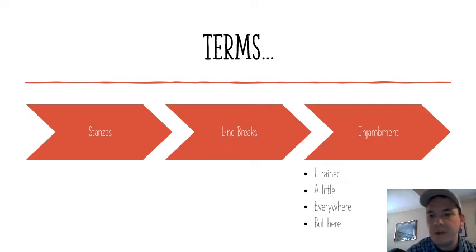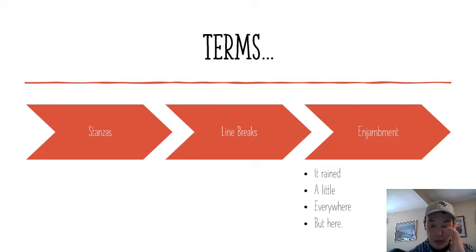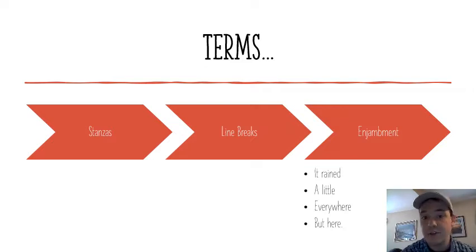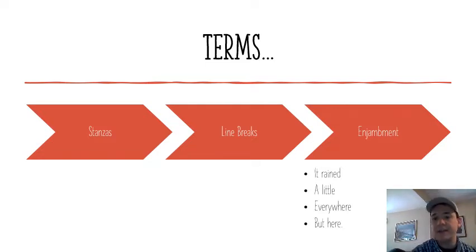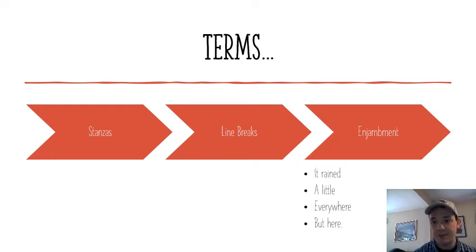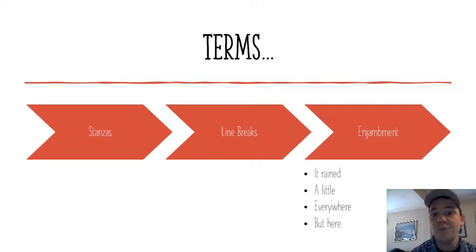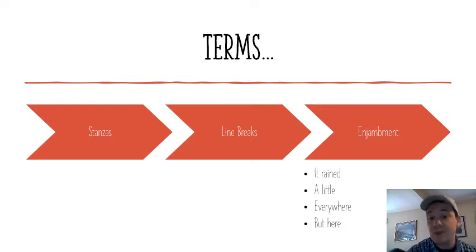Some terms to make sure you know: stanzas are poem paragraphs. When a poem follows a certain form, you usually have a certain number of lines per stanza, and they follow that pattern over and over again. Line breaks in a poem — you very seldom see a line of poetry go all the way across the page from one margin to the other. It's not like prose where you type in paragraphs and the text wraps around. With poetry, you decide where you're going to break the line.